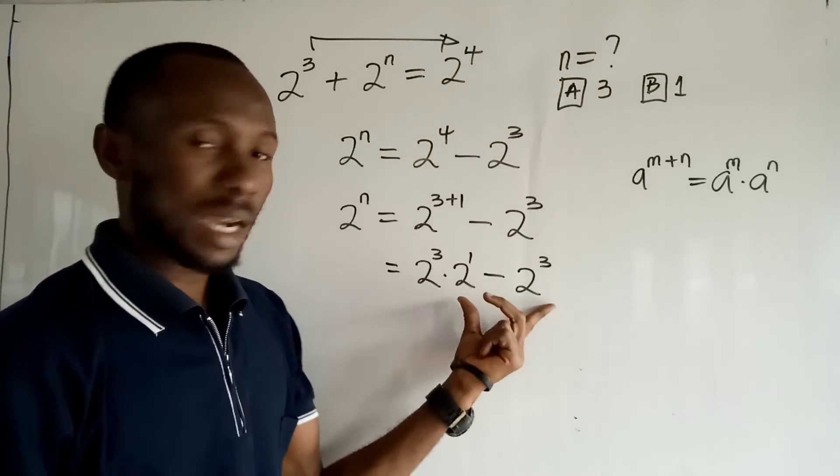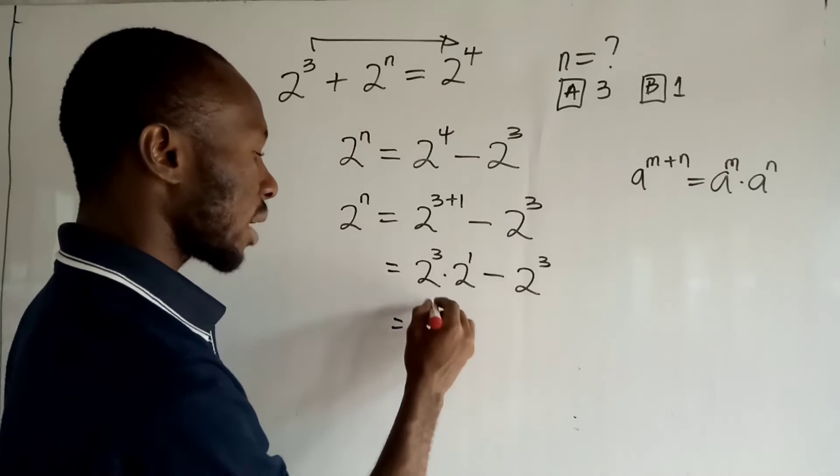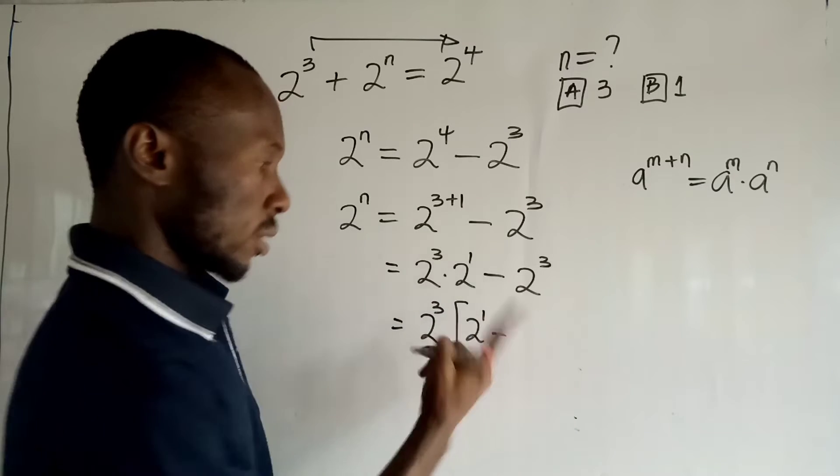Now you can see that this guy and this guy, they are in common terms. So I want to factor it out. So I have 2 to the power 3, times 2 to the power 1 minus 1.